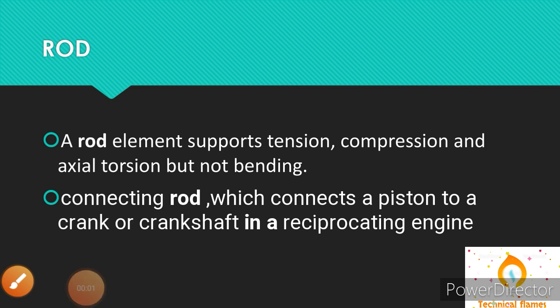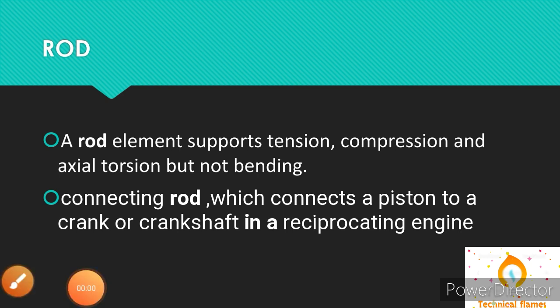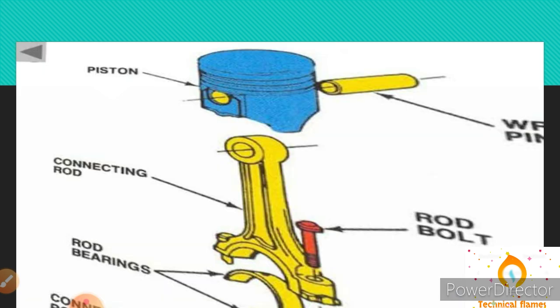Now I'm talking about the topic rod. So what is a rod? A rod is an element that supports tension, compression and torsion, but not bending — it's not bending. Only tension, compression and torsion. We have also heard the term connecting rod. Basically, a connecting rod is a type of rod which connects a piston to a crank or crankshaft in a reciprocating engine. Here is a basic demonstration of a connecting rod.